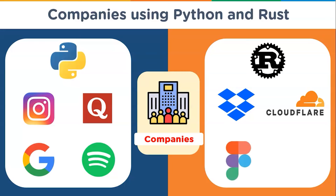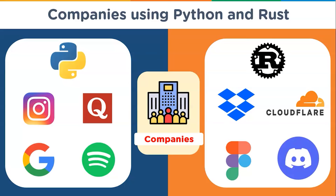Figma is a collaborative web-based design tool for vector graphics and interface prototyping. Due to their rapid growth, they chose Rust to rewrite their multiplayer sync engine, and Rust has helped them reduce the load on their servers. Discord is an instant messaging and digital distribution platform where users communicate via voice calls, video calls, text messaging, media, and files. Discord uses Rust in multiple places of their code base, both on the client and the server side.